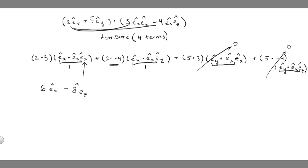That second term comes from 2 times minus 4, with e z-hat remaining since it was not operated on by the dot. So this is our final answer. Essentially, since a tensor has two directionalities, the result of a dot product between a vector and a tensor is a vector with one remaining degree of directionality — the other having been dotted away. Also note that if we had done tensor dot vector instead of vector dot tensor, the two unit vectors adjacent to the dot symbol would have been different, and the result would also be different.